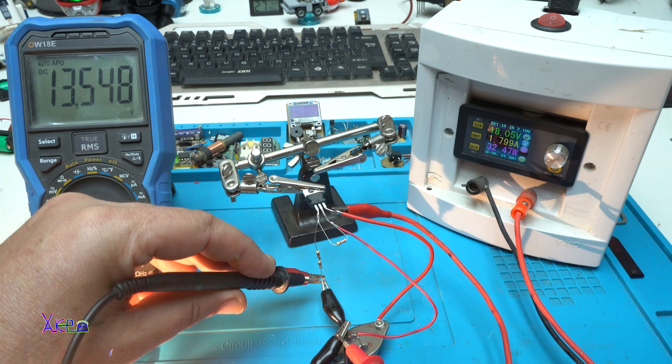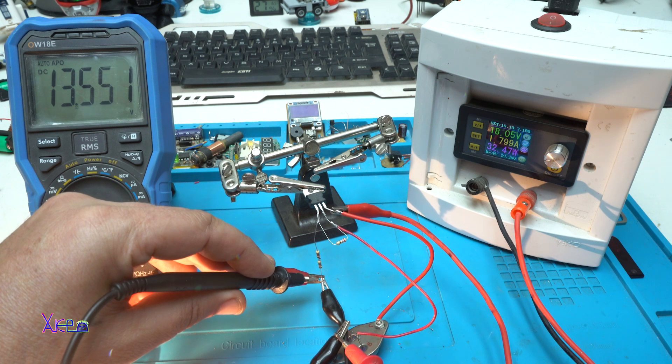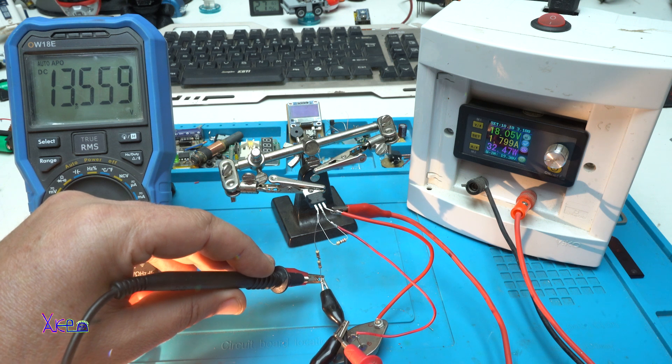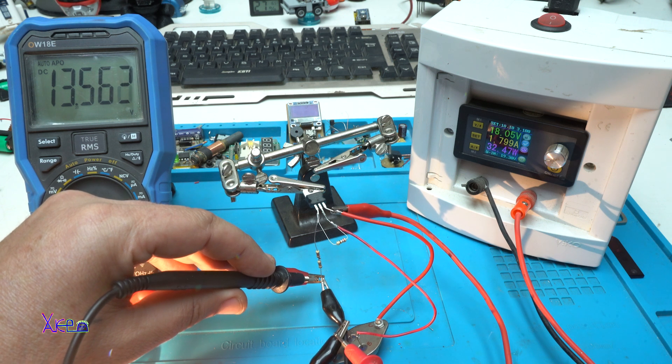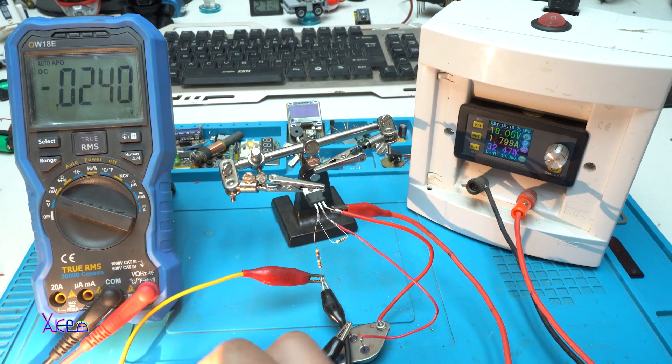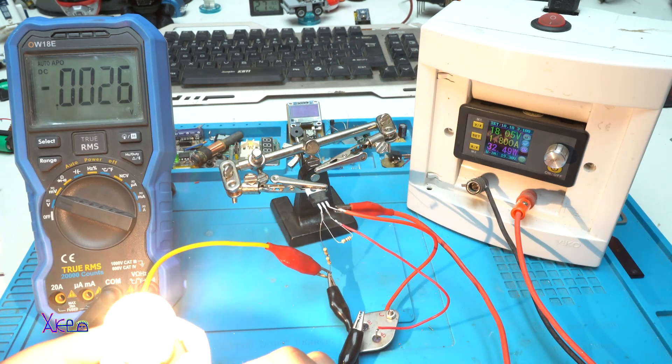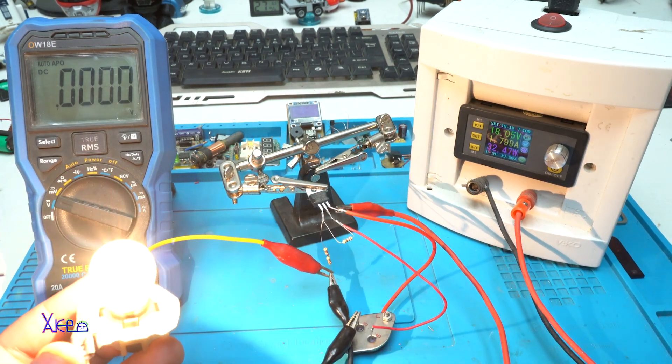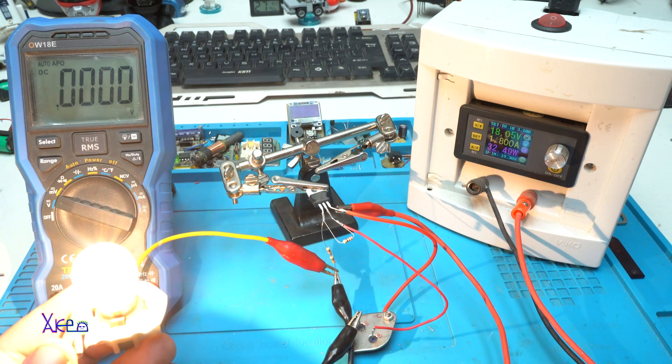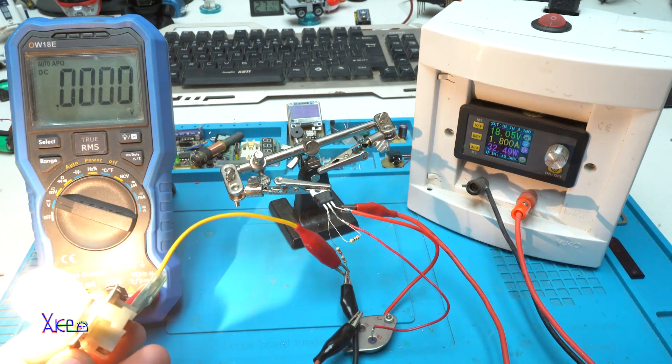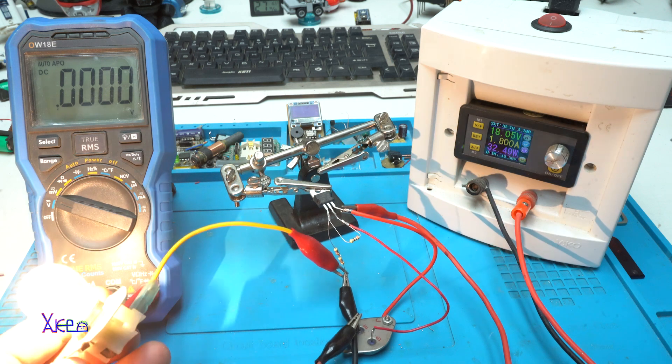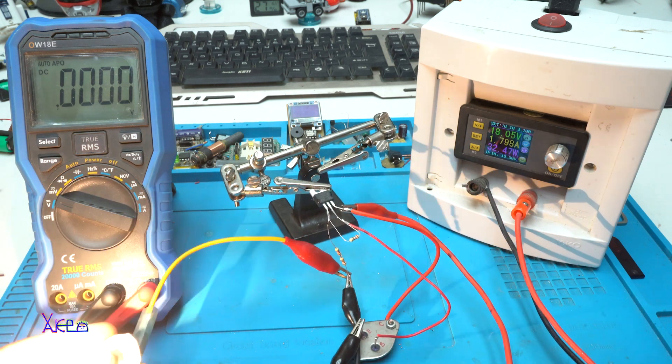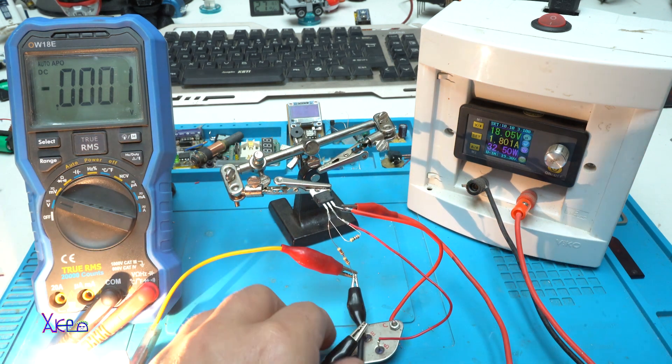13.5. Great. That is great. Meaning that the circuit is working. This bulb is acting like a battery. That means that we are on the right way. I am going to disconnect.